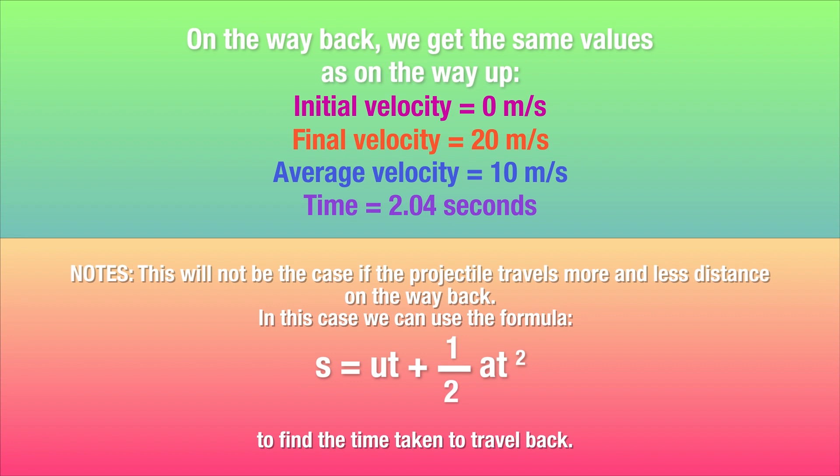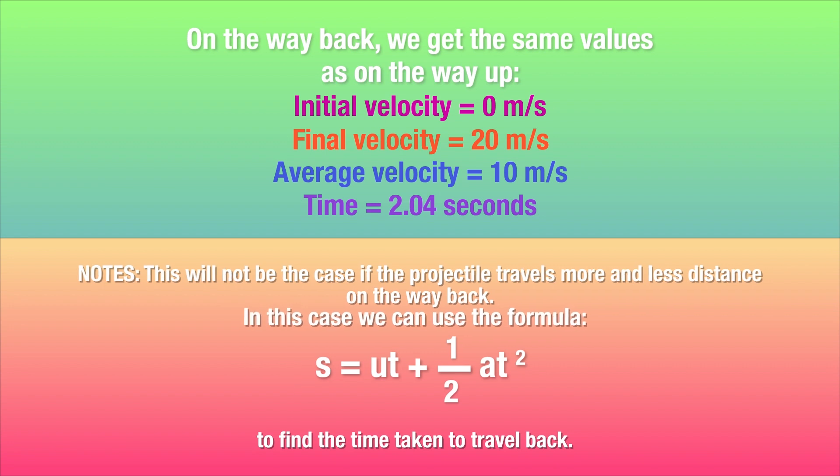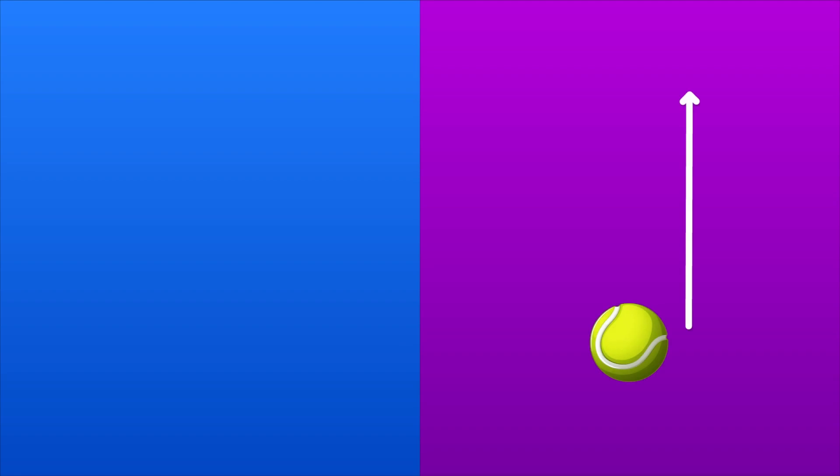Just a quick note, this won't be true if the projectile has to travel a different distance on the way down as opposed to going up. For example, the case of a ball being thrown from the top of a cliff. In these cases, we'll use the formula s equals ut plus half at squared to find the time taken to travel back. But that's something we'll be covering in a lot more depth in later units, so you don't need to worry about that right now.